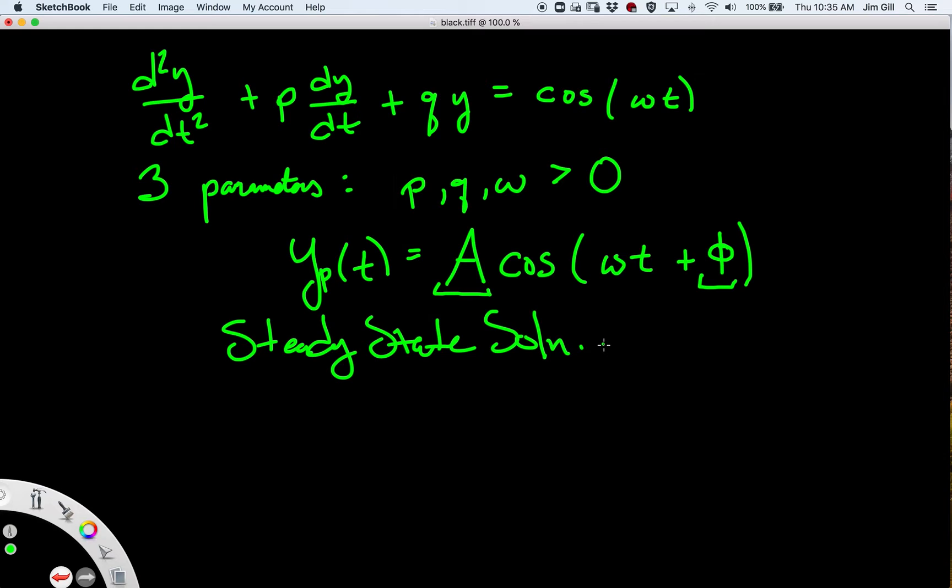Because as time goes on, the homogeneous or the solutions that come from the homogeneous equation exponentially decay, and so this is the equation that matters for large amounts of time. This is the part of the solution that matters.